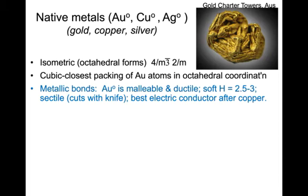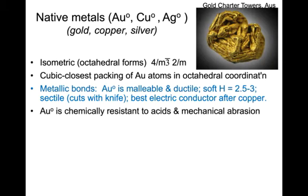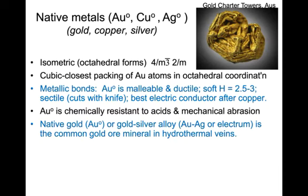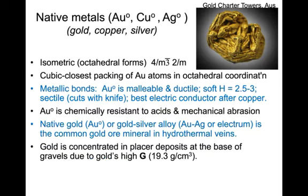Gold is the best electrical conductor after copper. However, gold is chemically resistant to acids and mechanical abrasion, and is therefore used for contacts in electronic gear as the most reliable contacts. Native gold, or gold-silver alloys called electrum, is the common gold mineral in hydrothermal veins. Gold is also concentrated in placer or stream deposits at the base of gravels due to gold's very high specific gravity — more than 19 grams per cubic centimeter. Gold is extremely rare, on the order of 1 part per billion in the crust.